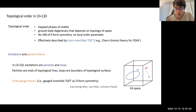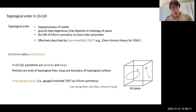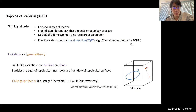Since I'm from condensed matter, I like to start with a brief intro to topological order states — gapped phases of matter with ground state degeneracy that depends on the topological space. This degeneracy cannot be explained by standard spontaneous breaking of zero-form symmetry, so there's no local order parameter which can distinguish the vacuum. Topological phases are effectively described by non-invertible topological quantum field theory. In 3+1 dimensions, there are quasi-particle and quasi-loop excitations.